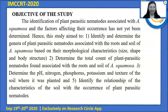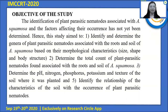Another objective is to determine the total count of plant parasitic nematodes found associated with the roots and soil of Atis. Third, to determine the pH, nitrogen, phosphorus, potassium, and texture of the soil where it was planted, and to identify the relationship between the characteristics of the soil and the occurrence of plant parasitic nematodes.